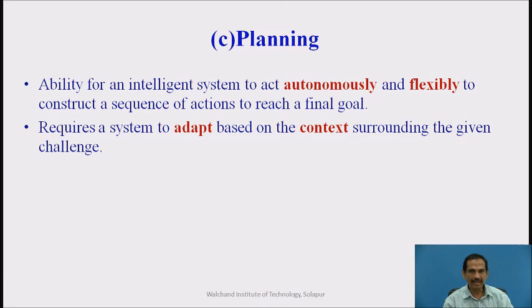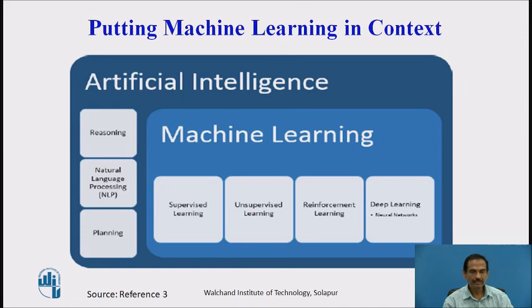Planning is the third sub-area of artificial intelligence — the ability of AI systems to act autonomously and flexibly to construct a sequence of actions to reach a particular goal. It requires a system to adapt based on the context given by the surrounding environment and the challenge at hand. Putting all these together, we see in this diagram that artificial intelligence is connected to machine learning, and both use techniques of statistics and data mining for further processing their computations.